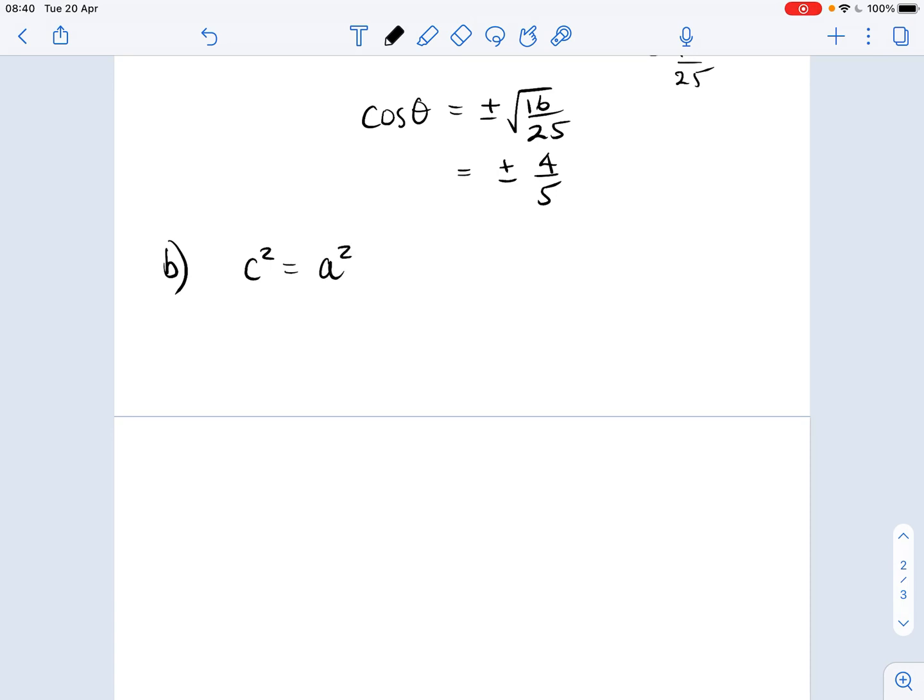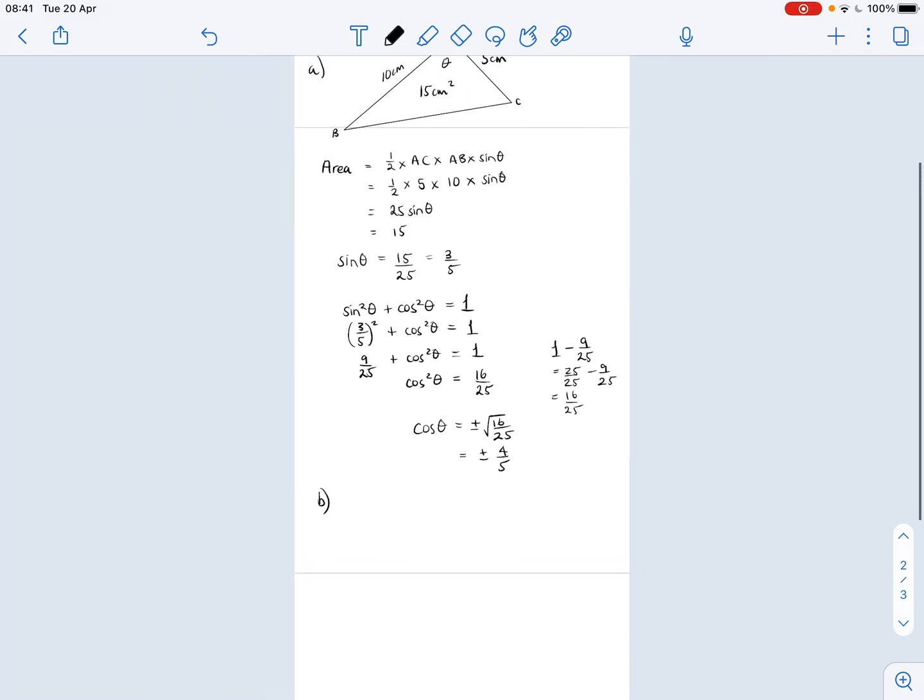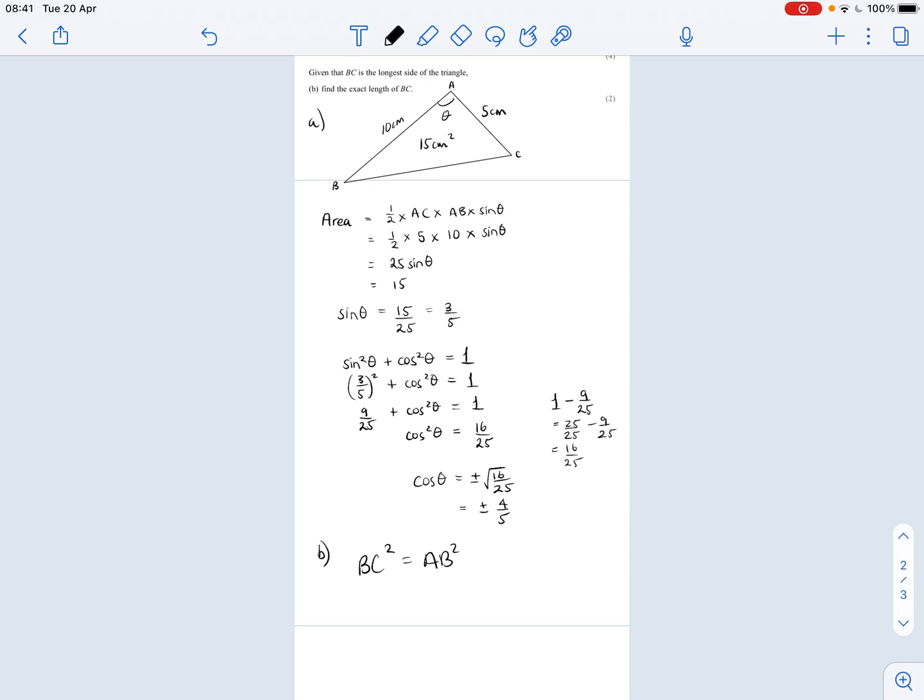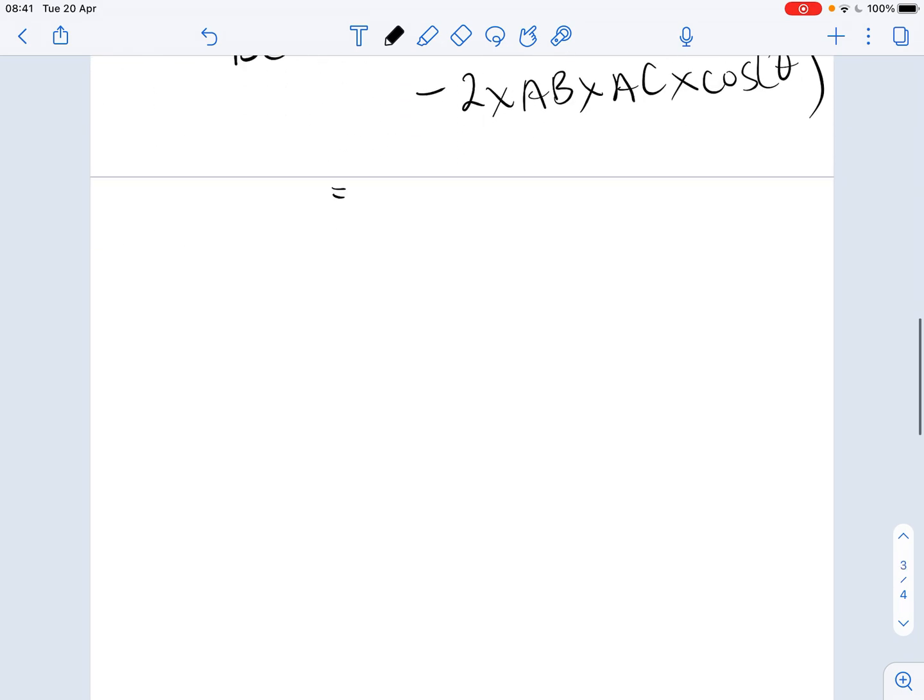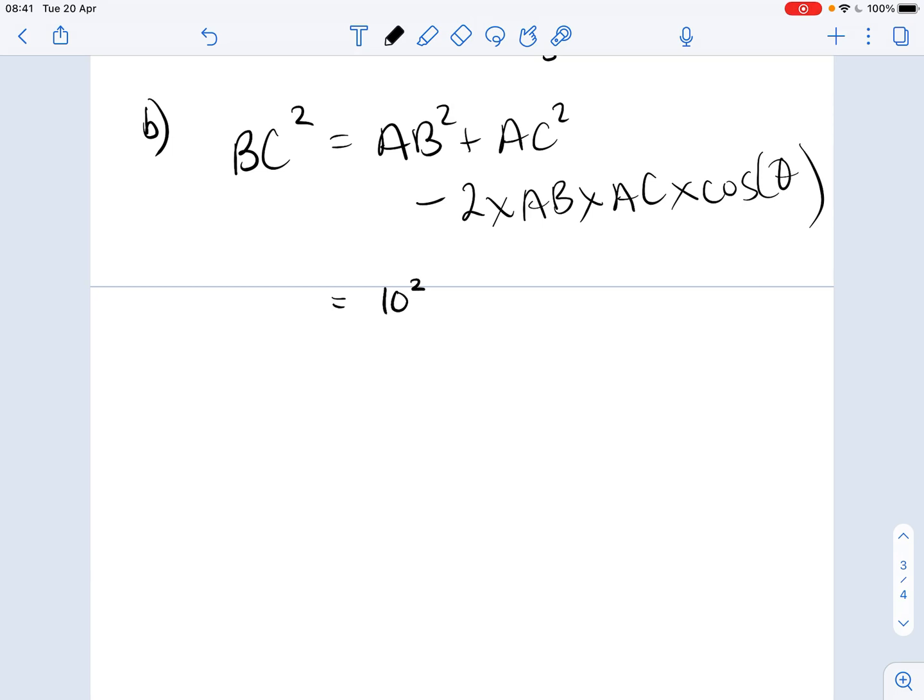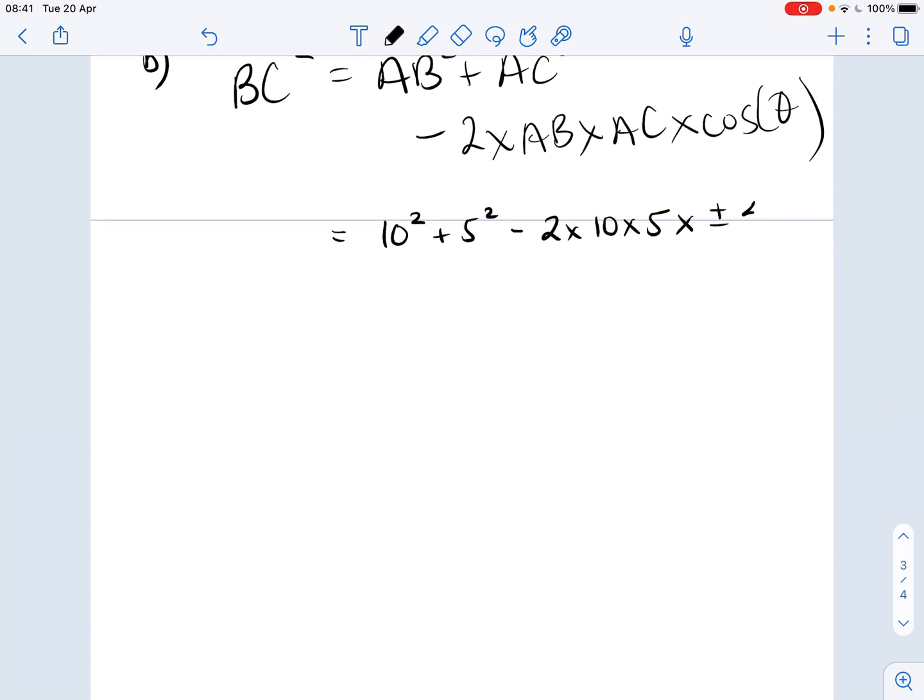But I'm going to write it in terms of my letters. So the cosine rule would then be BC squared equals AB squared plus AC squared minus 2 times AB times AC times the cosine of theta. Okay, so this is going to tell me what BC is. So what was AB? AB was 10 and AC was 5. So this says 10 squared plus 5 squared minus 2 times 10 times 5 times my cosine theta, which I found in part A to be plus or minus four-fifths. So I'm going to put plus or minus four-fifths there.